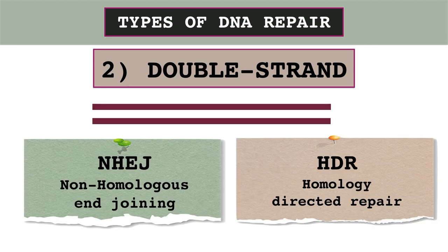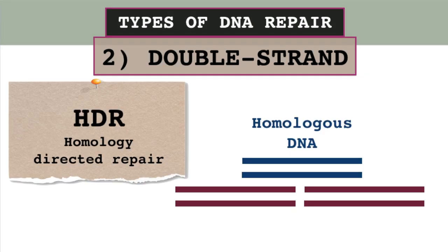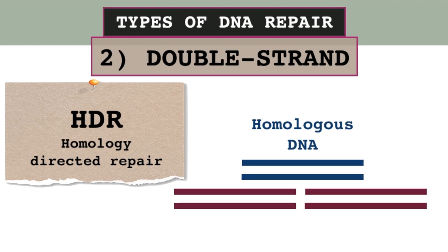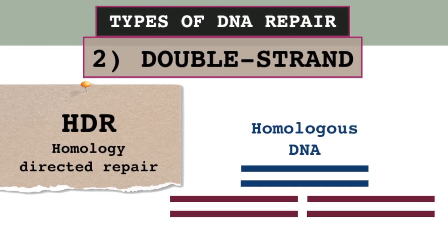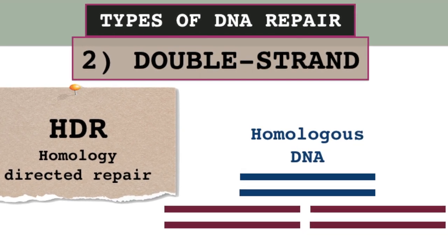Now let's get to the double-strand repairs. There are two types: non-homologous end-joining and homology-directed repair. In the case of non-homologous end-joining, the cell attempts to rejoin the two DNA strands without using a template DNA. Due to the lack of a template DNA and the double-strand breakage, some nucleotides may be lost if the strands are not fully complementary. In the case of homology-directed repair, a complementary or homologous DNA molecule serves as a template to help accurately repair the double-strand break.